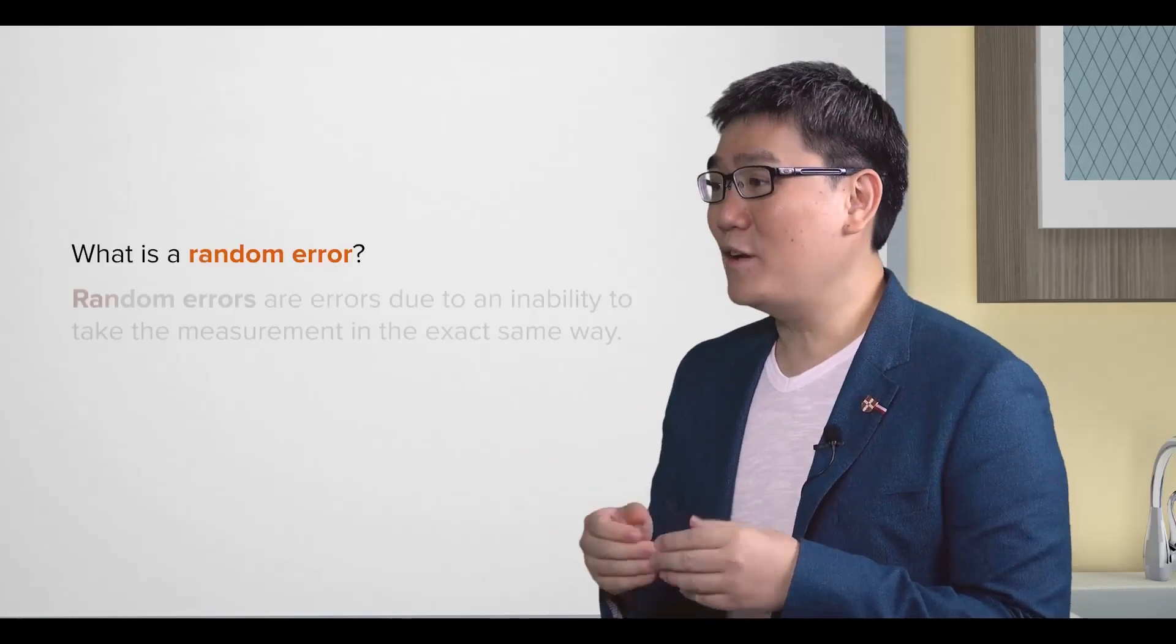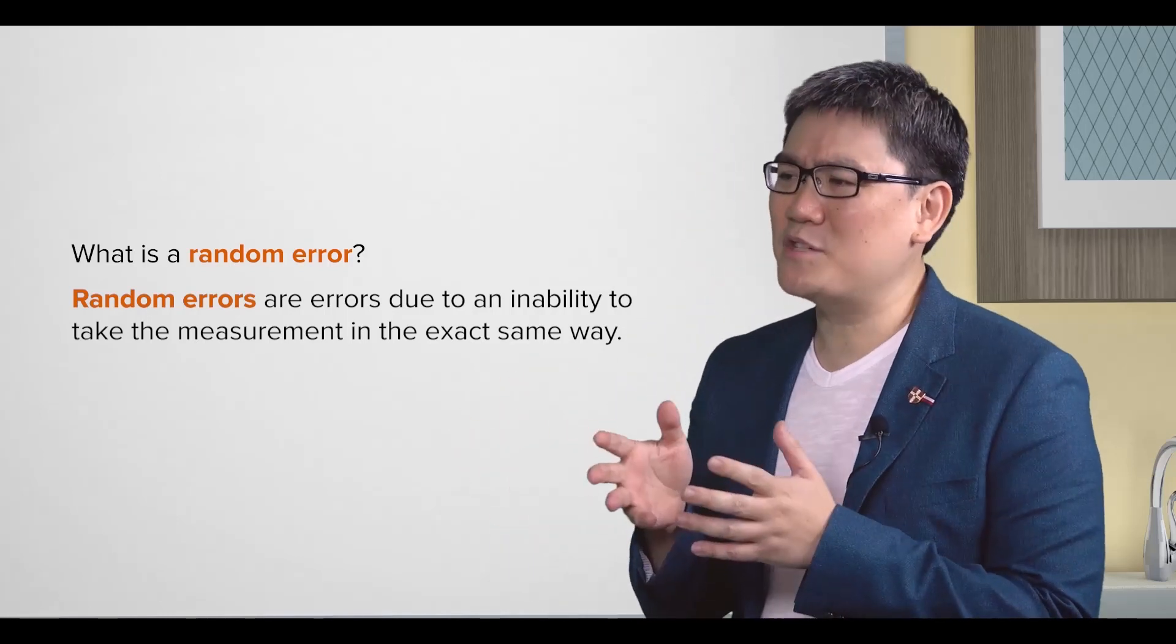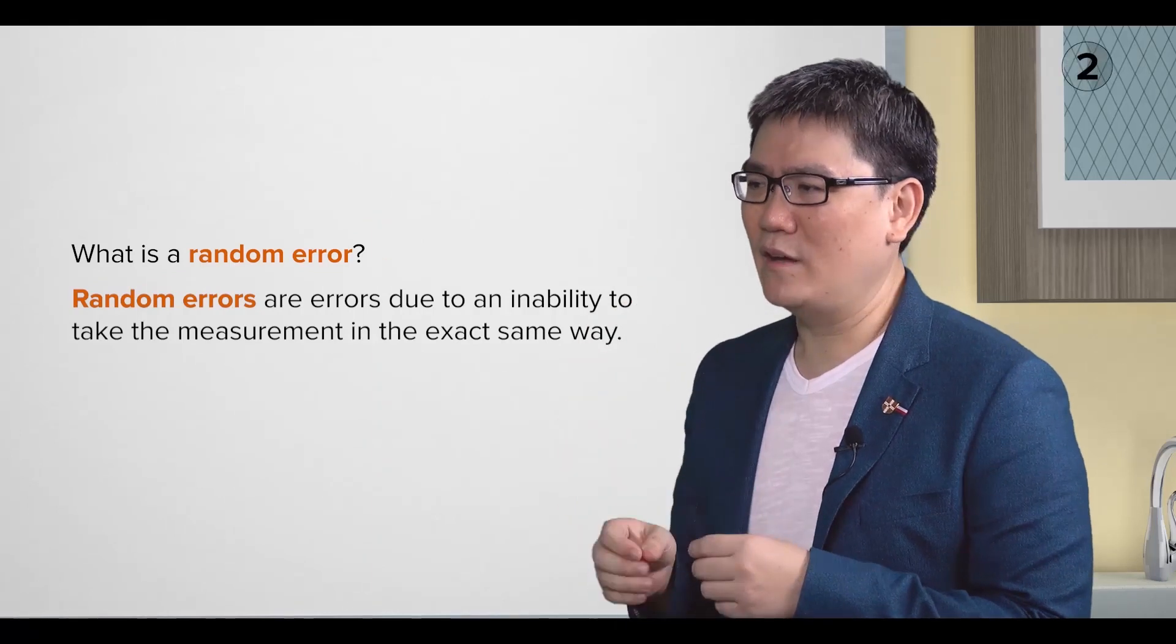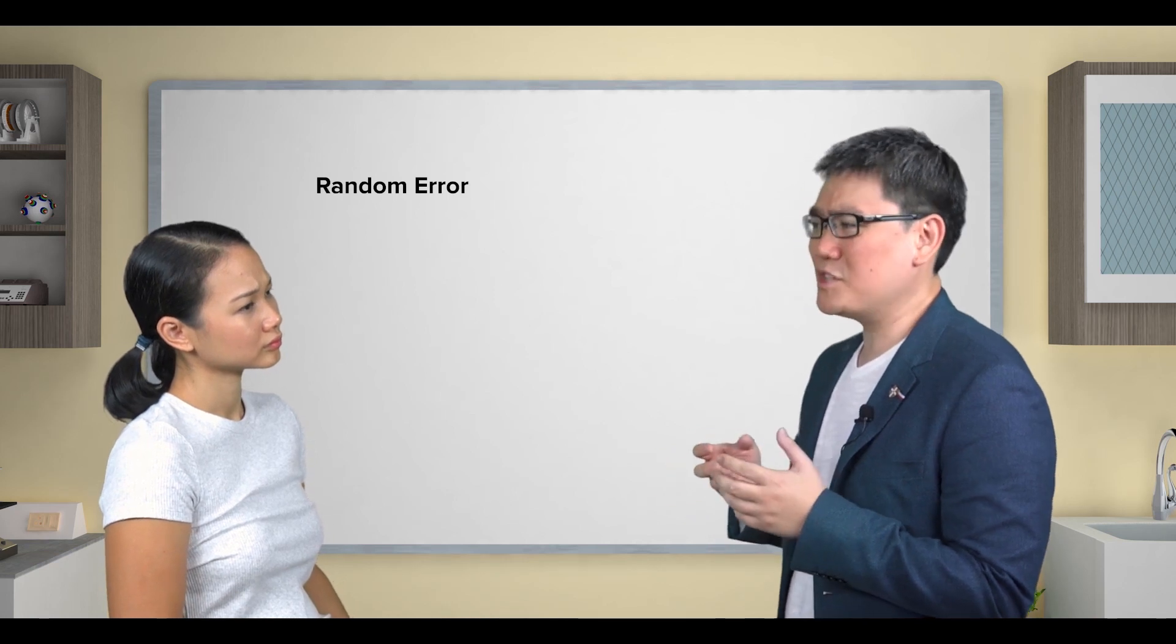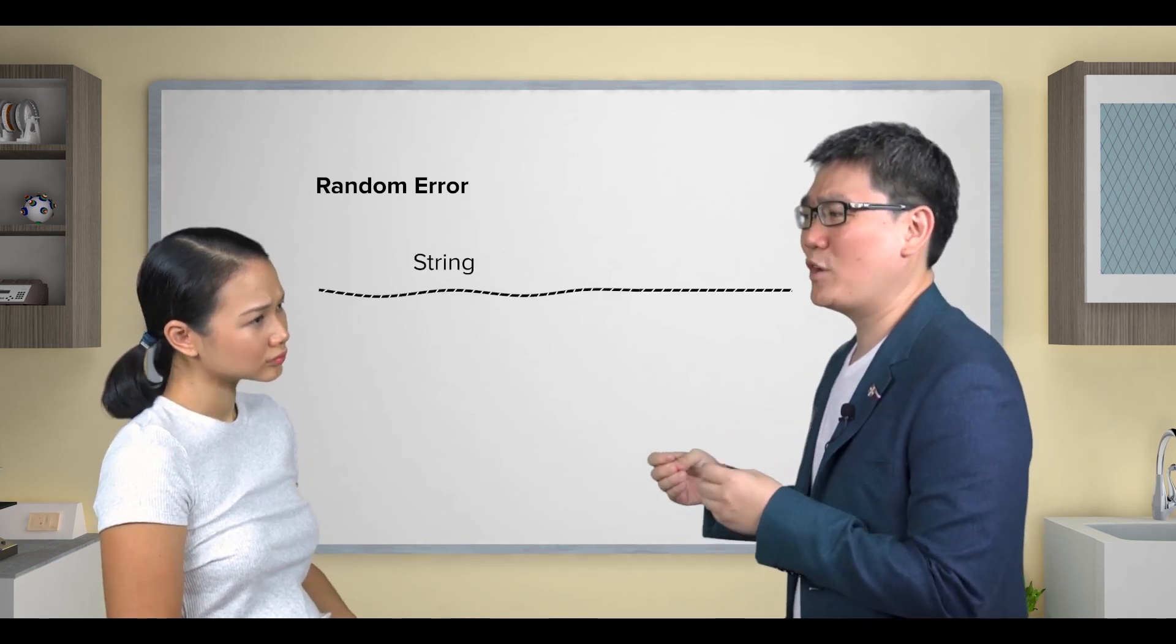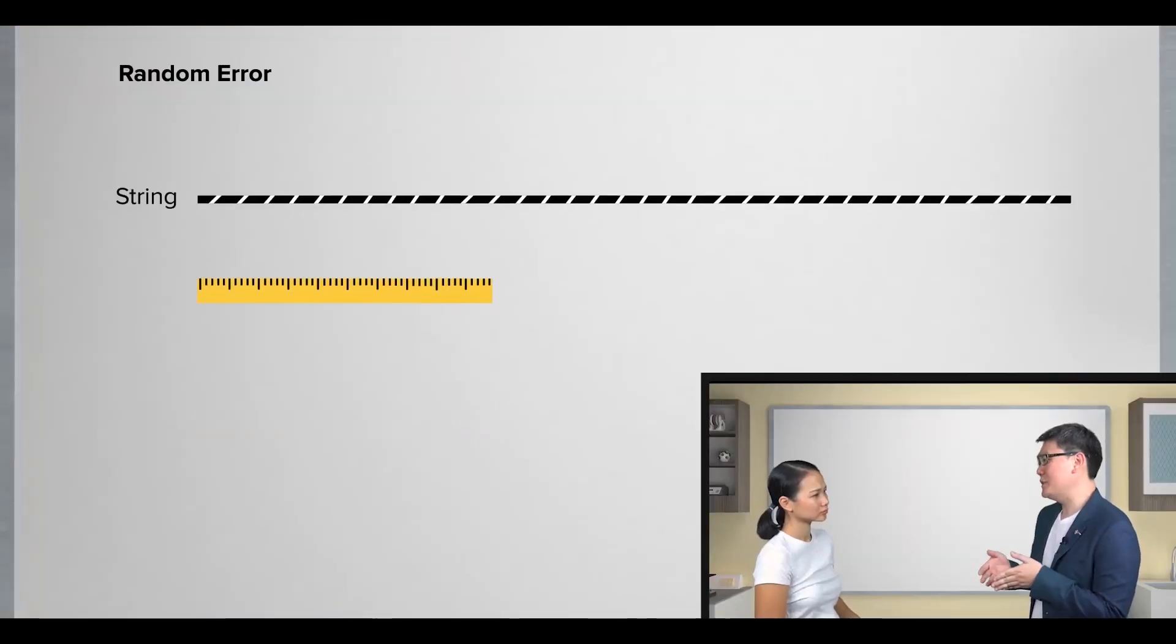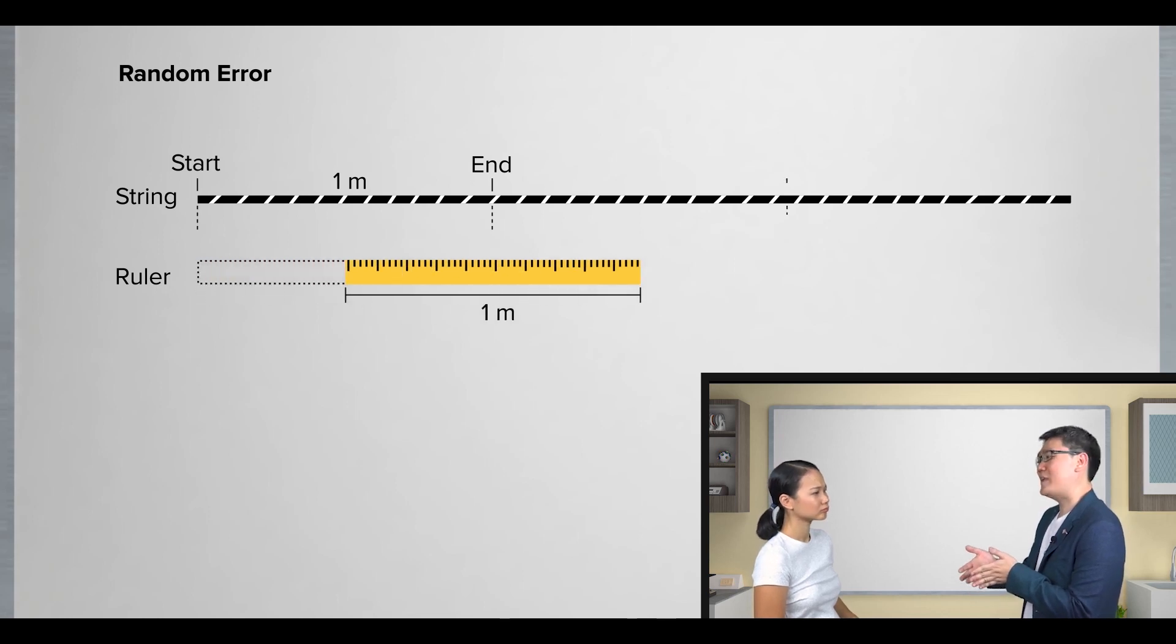On the other hand, random errors are errors due to an inability to take measurements in the exact same way. For example, when you want to measure a really long piece of string over a meter long using only a meter rule, then you would need to estimate where one measurement ends and where the next one starts.